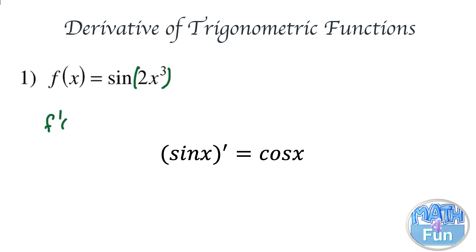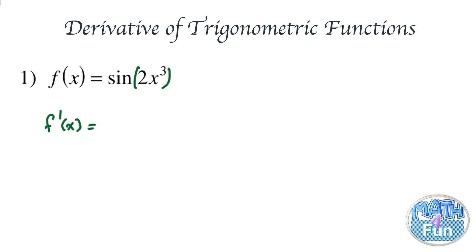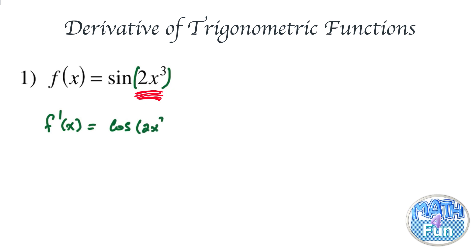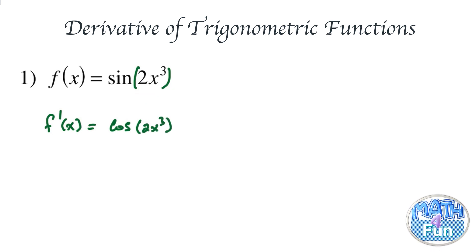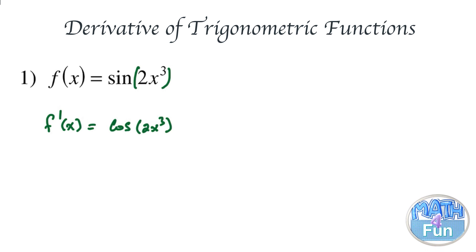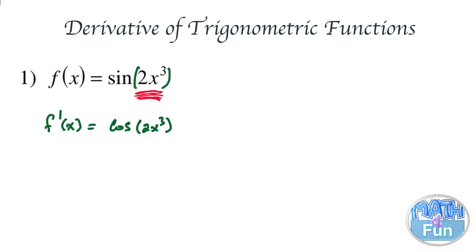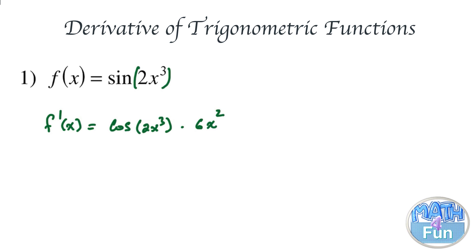So we write f prime of x equal to cosine 2x cubed, because that is the angle for the sine function. Then we multiply by the derivative of the inside. The derivative of 2x cubed is 6x squared — that's 3 times 2, which is 6, and we take away 1 from the power 3, so it becomes 2.